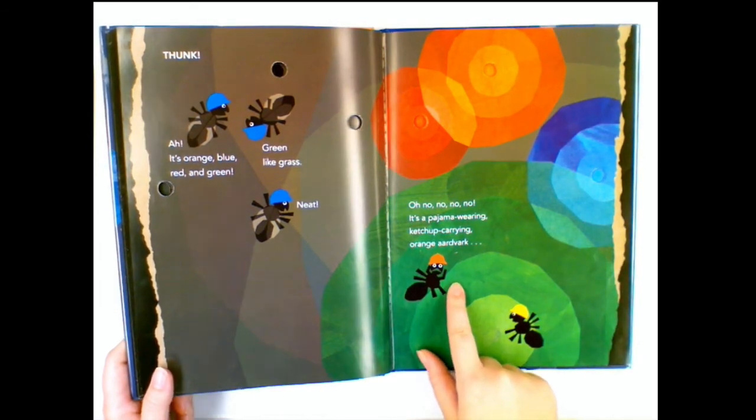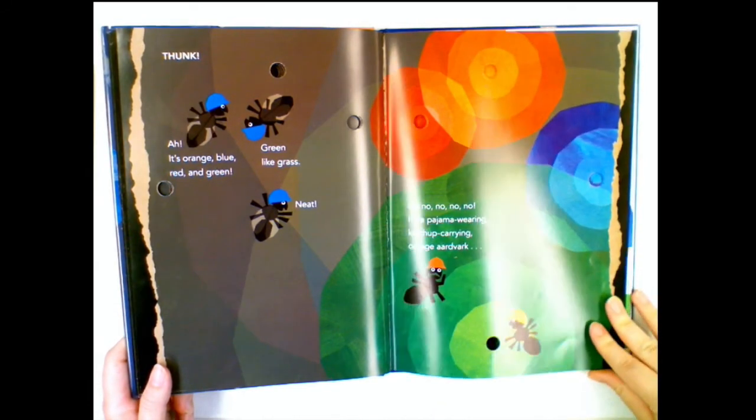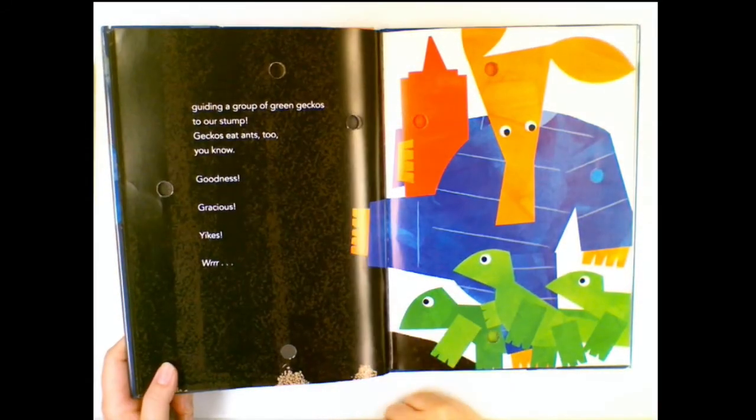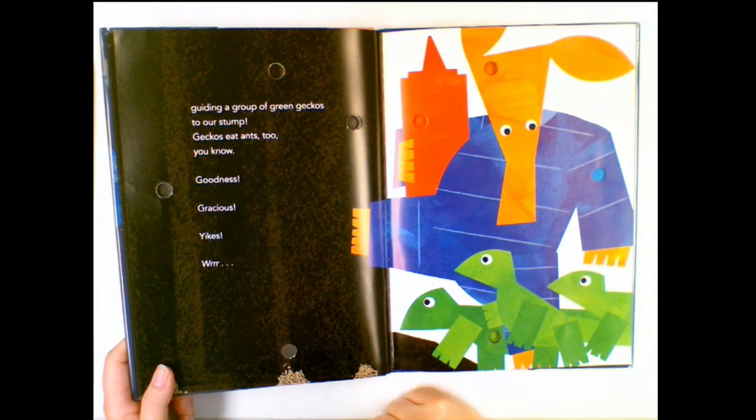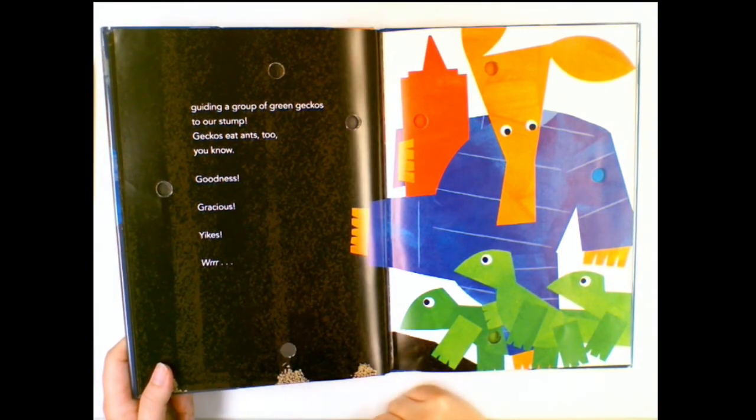Oh no, no, no, no, no, no! It's a pajama wearing ketchup carrying orange Aardvark guiding a group of green geckos to our stump! Geckos eat ants too, you know?